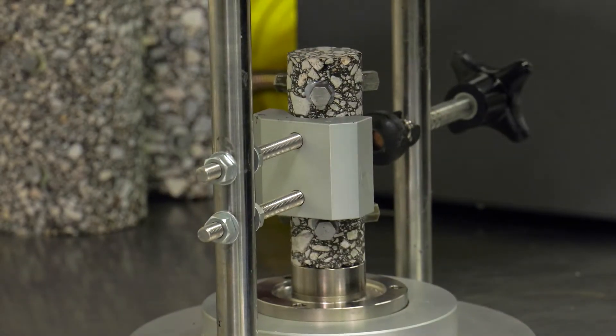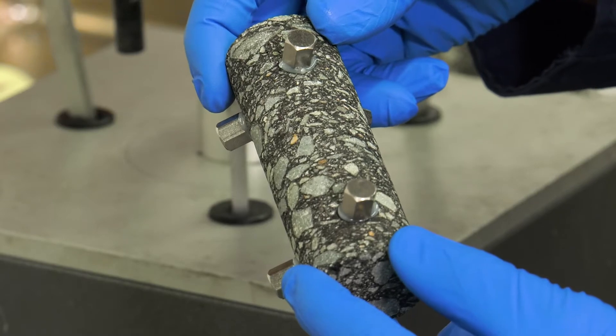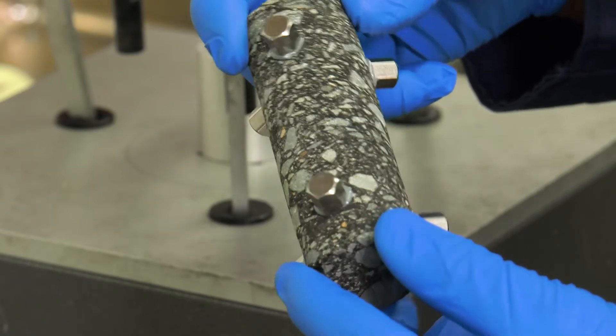Also, attach gauge points to your small specimen. This procedure is covered in video 2 on dynamic modulus testing.